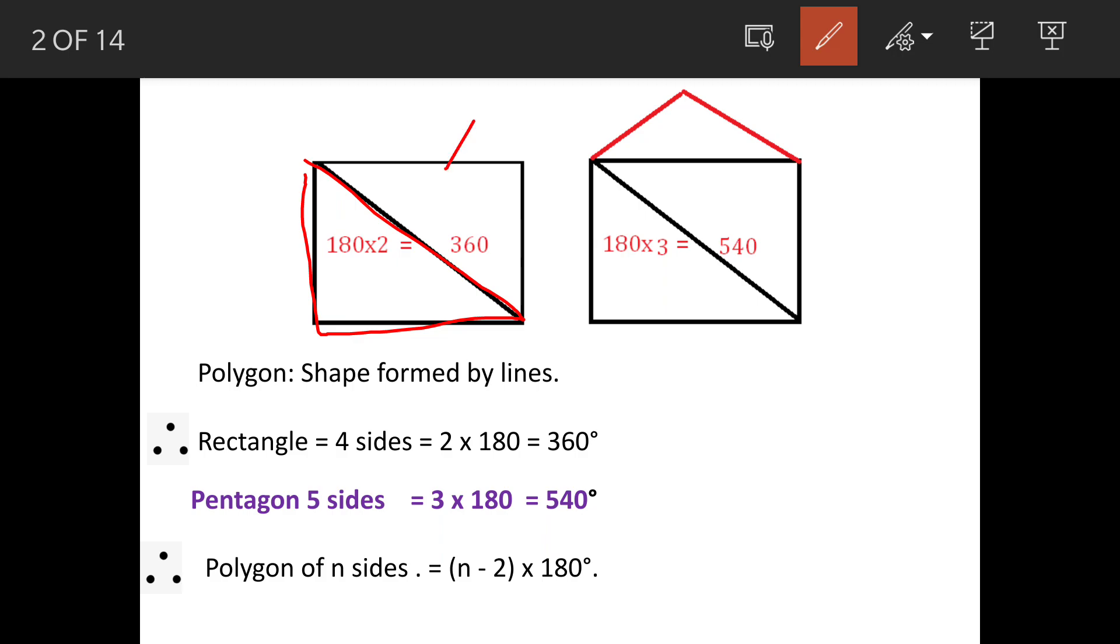And the angles are, one triangle has got 180 degrees, so two triangles means 360 degrees. So we can say rectangle with four sides has got 2 times 180 degrees angle. Similarly, five sides, we add one more triangle here.